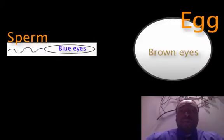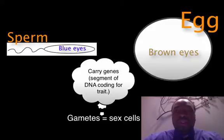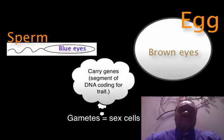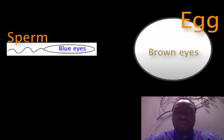Shown here is a sperm and egg, which are known as gametes or sex cells. Gametes carry genes, which are segments of DNA that code for traits. In this oversimplified image, we'll pretend the sperm and the egg are carrying just one gene for eye color, even though they must carry thousands more. In this case, the sperm is carrying the blue version of the eye color gene while the egg is carrying the brown version.